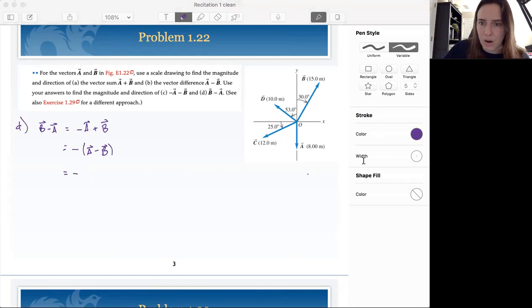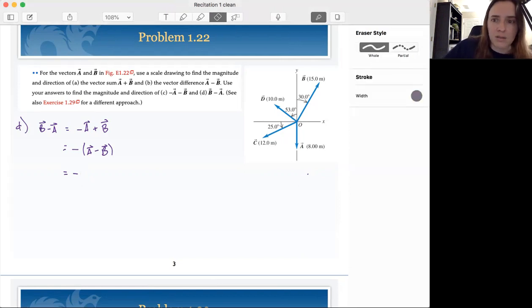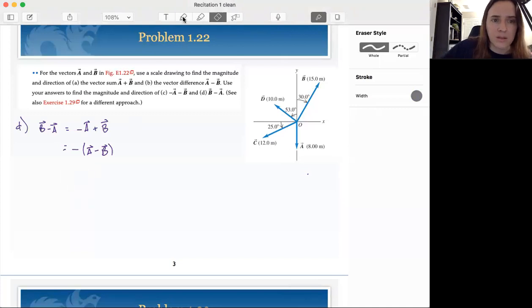So from part B, we had a magnitude of 22 meters at an angle of 250 degrees. So now we're still going to have a magnitude of 22 meters.